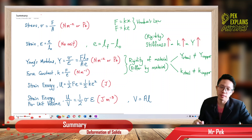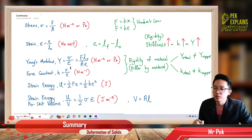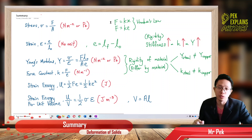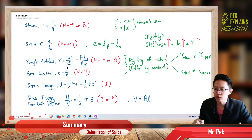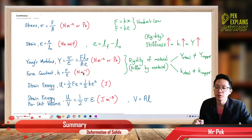Force constant K is force over elongation. This formula comes from Hooke's Law — when you rearrange elongation below force. So the force constant is force over elongation: Newton divided by meter, so the unit is Newton per meter.